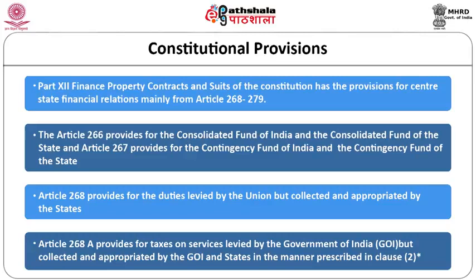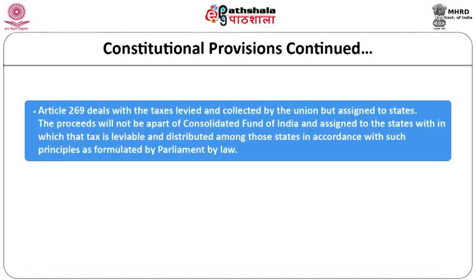Article 269 deals with taxes levied and collected by the union but assigned to the states. The proceeds do not become part of the Consolidated Fund of India and are assigned to the states within which the tax is leviable, distributed among those states in accordance with principles formulated by parliament by law. There are certain taxes levied and collected by the Government of India in certain states — not all states — and the proceeds are allocated to those states from where they are collected.